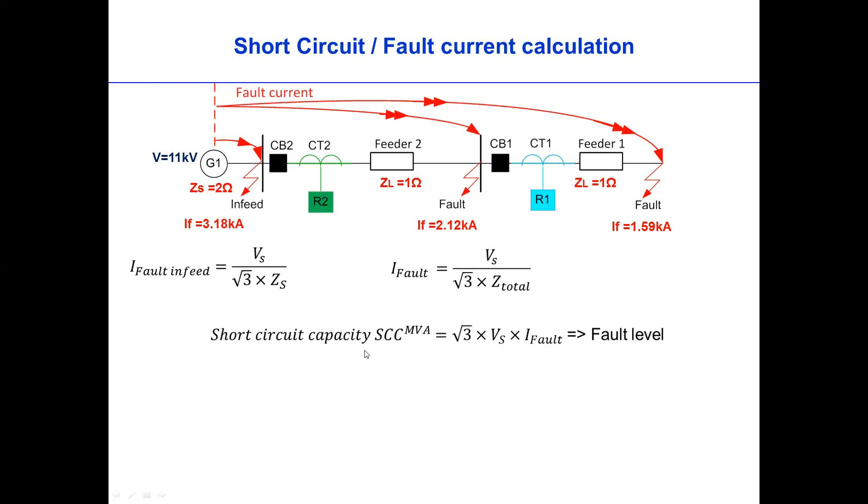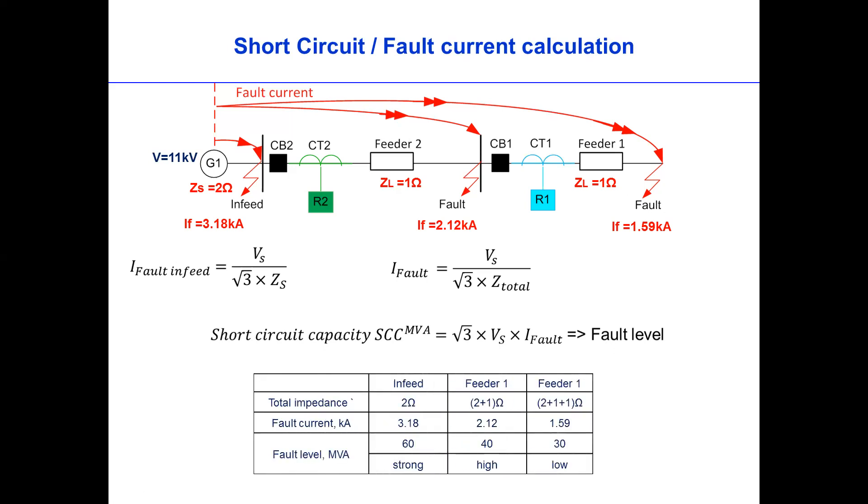In another way, we can also calculate the short-circuit capacity in MVA. That is about root 3 times voltage at the fault point times the fault current at the fault point as well. That is what we call fault level.